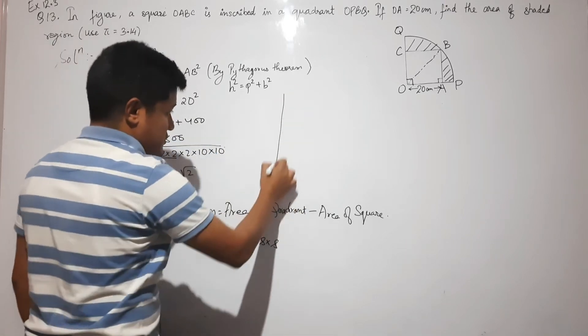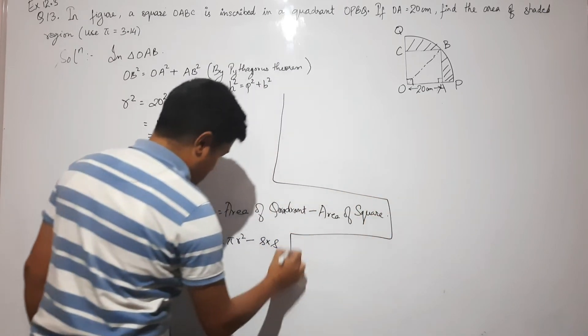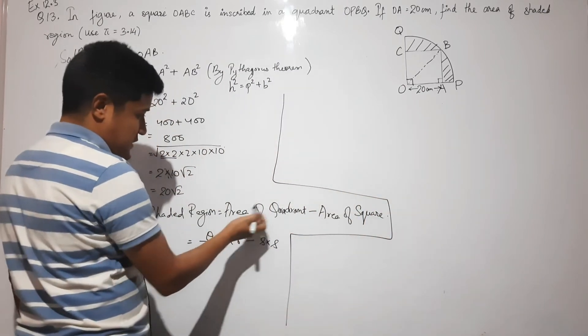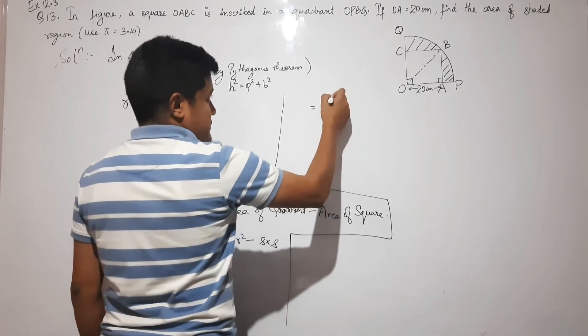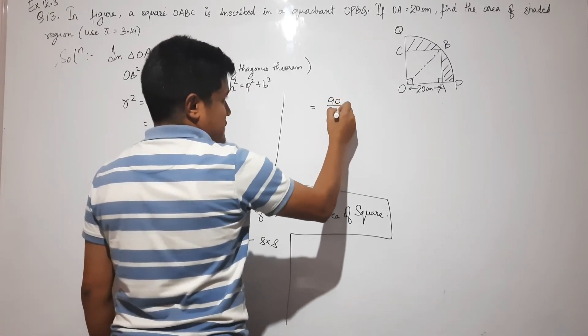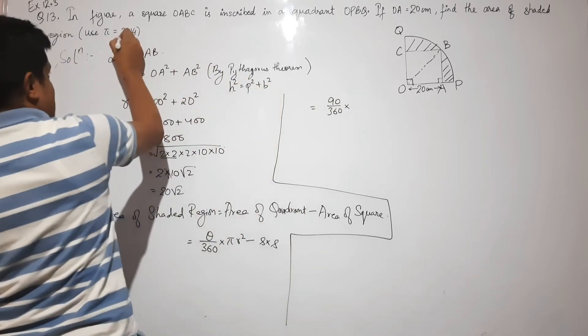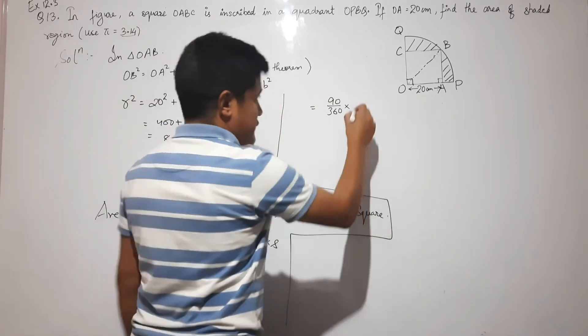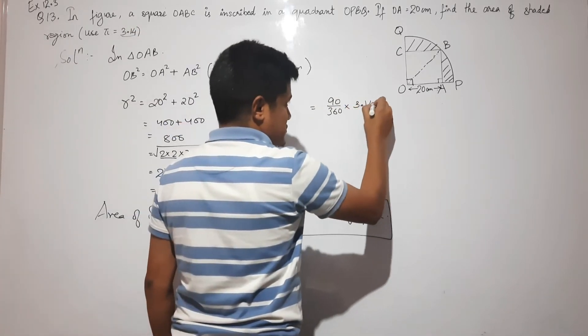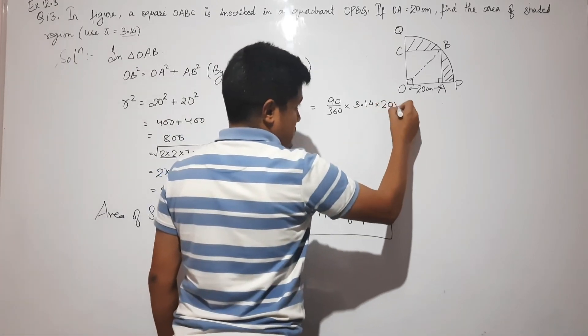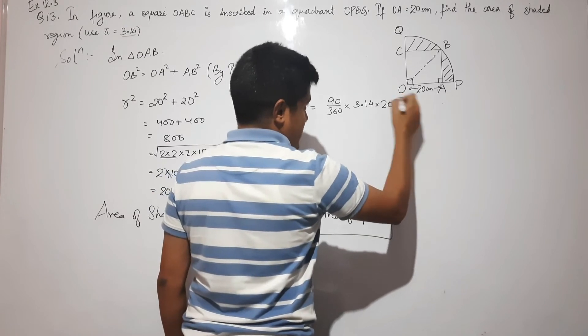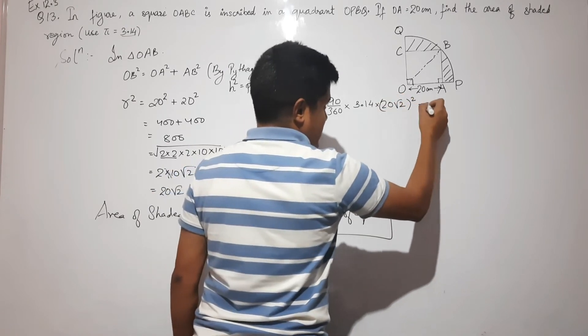Let us continue here. Area of quadrant minus area of square: 90/360 × π (where π = 3.14) × (20√2)² minus